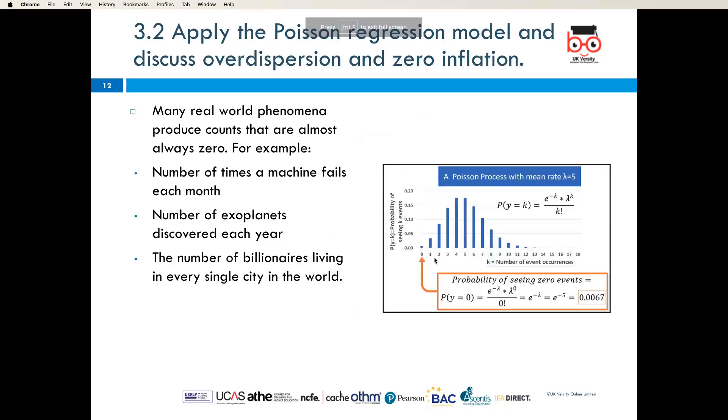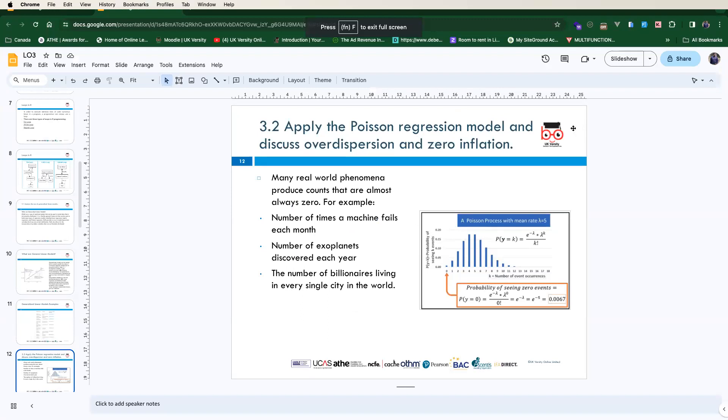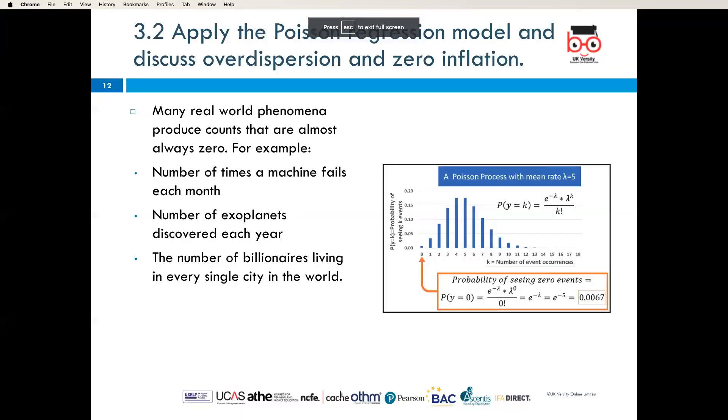The next topic is apply the Poisson regression model and a discussion of over-dispersion and zero inflation. Many real world phenomena produce counts that are almost always zero. For example, number of times a machine fails each month, number of exoplanets discovered each year, number of billionaires living in every single city in the world. This is a chart showing this which should be by the side.